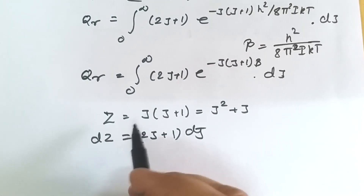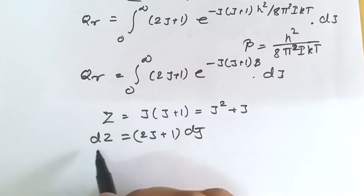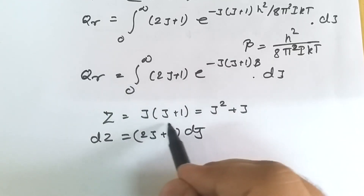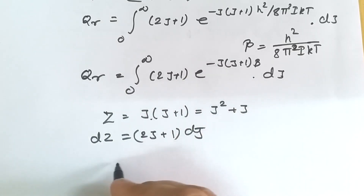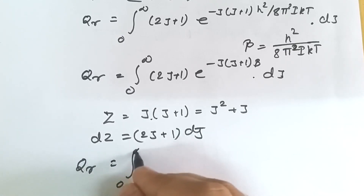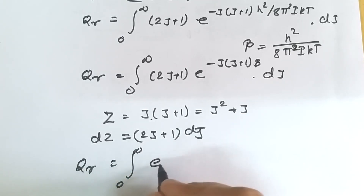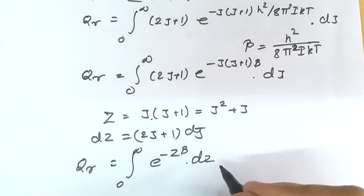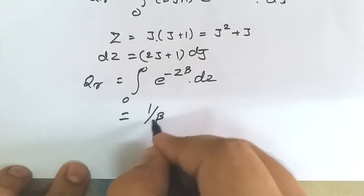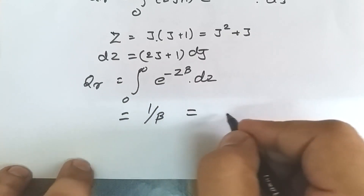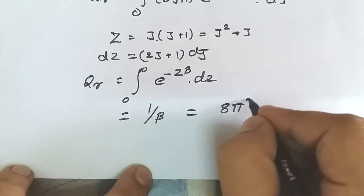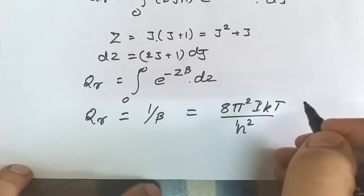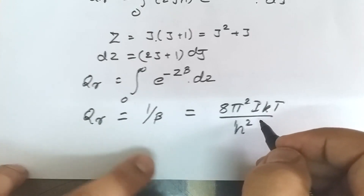Substituting z = j(j+1) and dz = (2j+1)dj, the term (2j+1)dj is replaced by dz, and j(j+1) is replaced by z. Our equation becomes qr = integral from 0 to infinity of e raised to minus z·beta dz. The integral evaluates to 1/beta from calculus, which equals 8π²IkT/h². Hence, the rotational partition function qr = 8π²IkT/h².